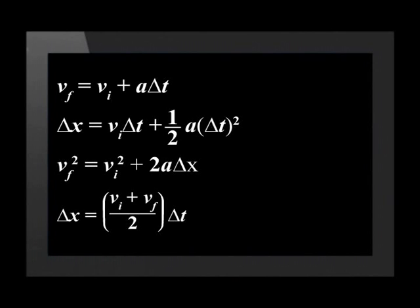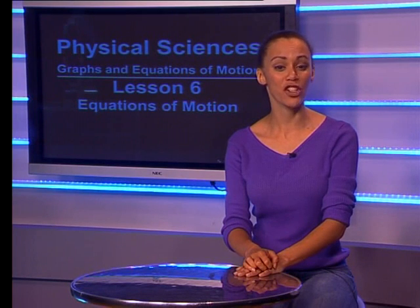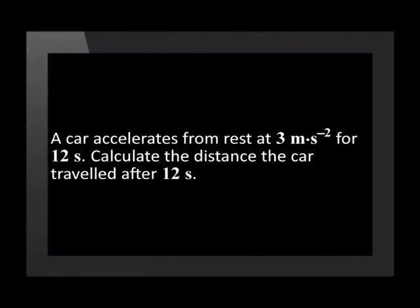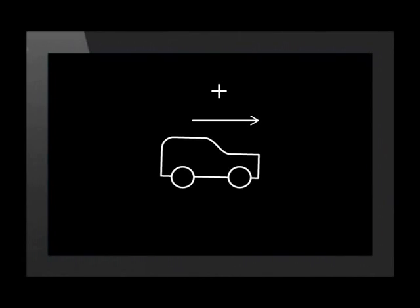Here we have all four equations of motion. Let us use them to solve a problem. There are several steps used to solve an equation of motion problem. Always make sure to read the question properly. A car accelerates from rest at 3 meters per second squared for 12 seconds. Calculate the distance the car travelled after 12 seconds. The first thing we do is draw a picture of the problem, fill in the positive direction of the motion — here we choose forward, or to the right, as positive.